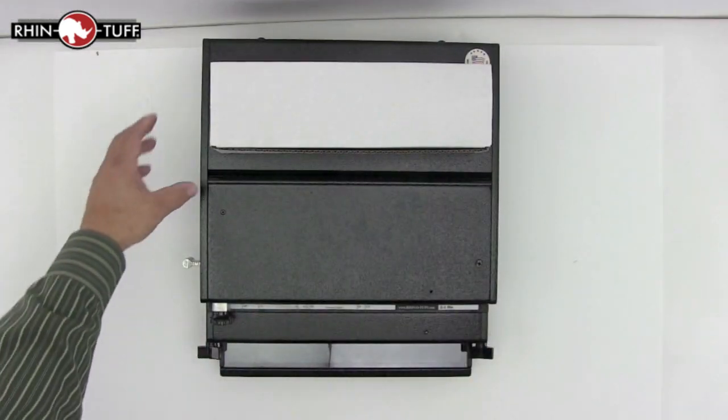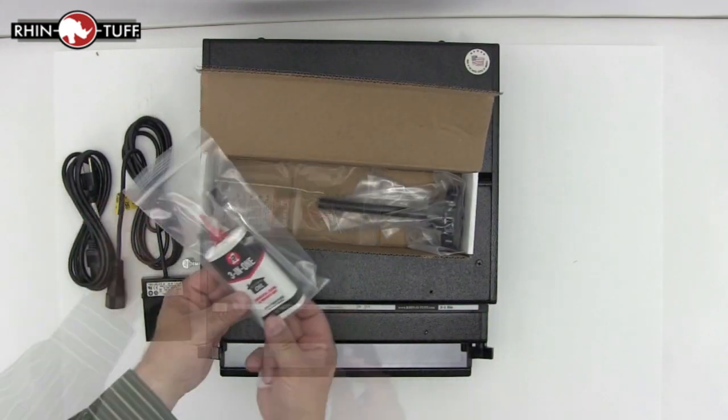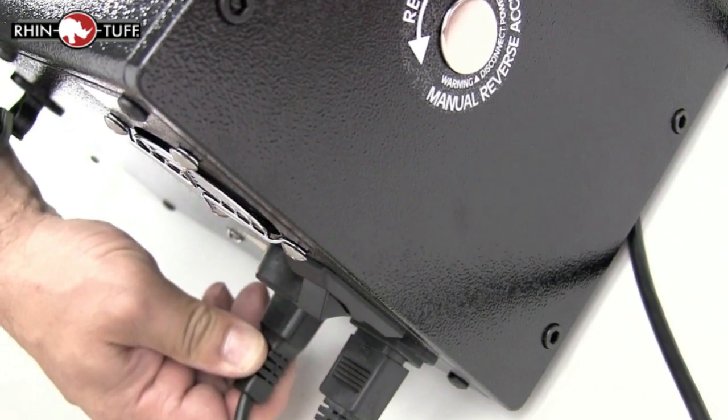The smaller white box inside the large main box contains the foot pedal, power cord, some oil and the manual reverse knob. The power cord and foot pedal plug into the back of the machine.